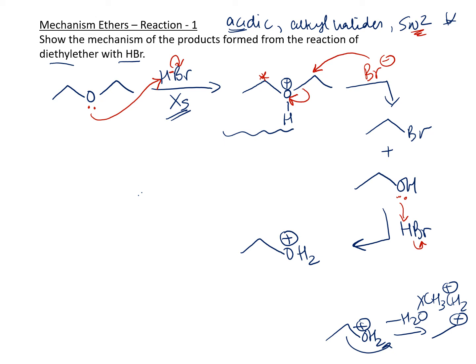So now once we have the oxonium ion formed here, now the H2O, it's a good leaving group. So now comes in the second bromide ion that you cleaved over here in the previous reaction. And again, now you will do another SN2 reaction. So minus H2O, water goes away now, and now you will have ethyl bromide formed again.